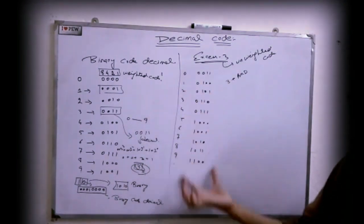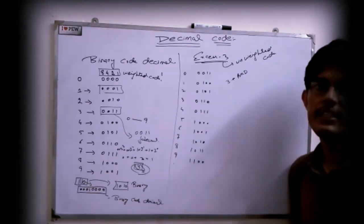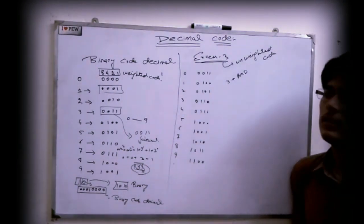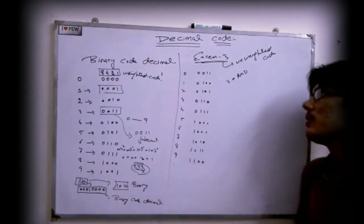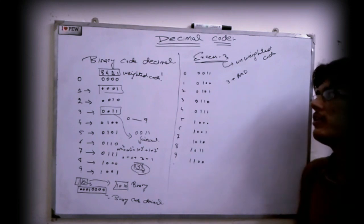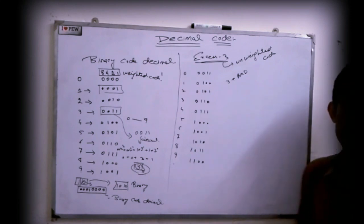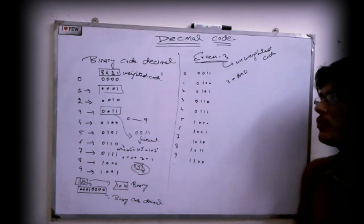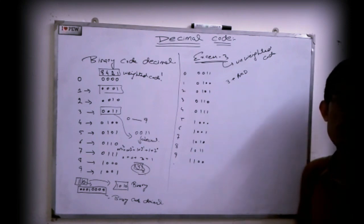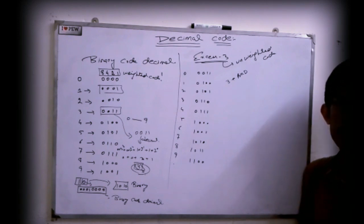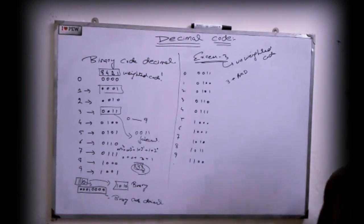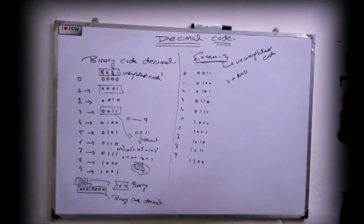Most computers use this type of code. We also have a negative decimal code, and that negative code is the 8, 4, minus-2, minus-1 code.